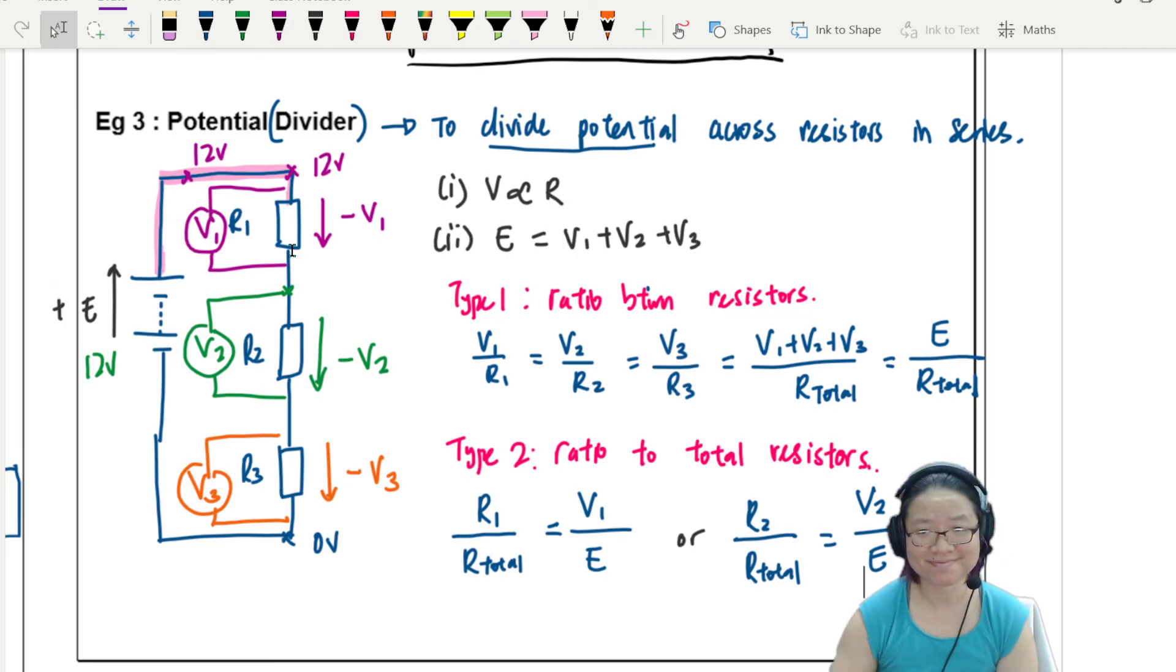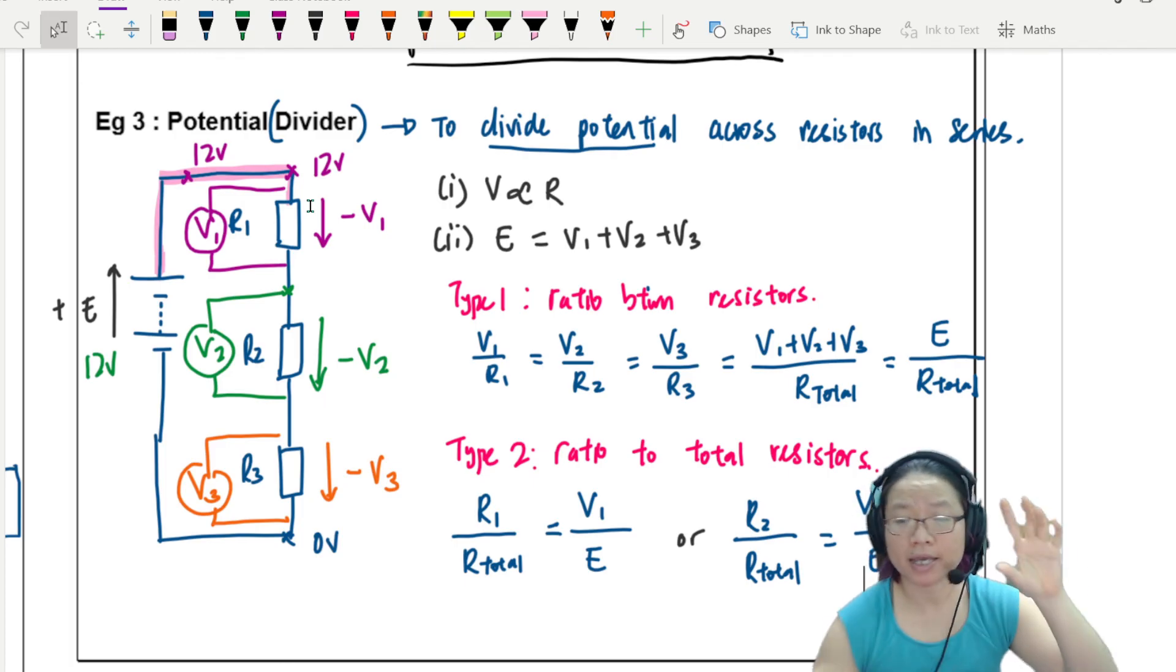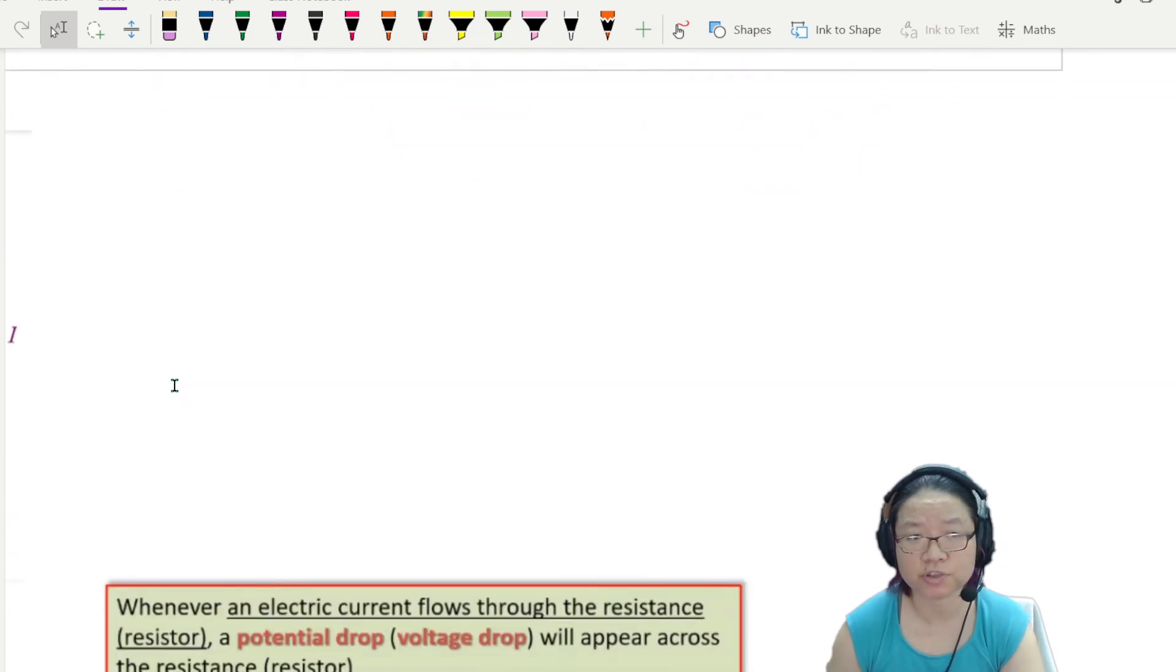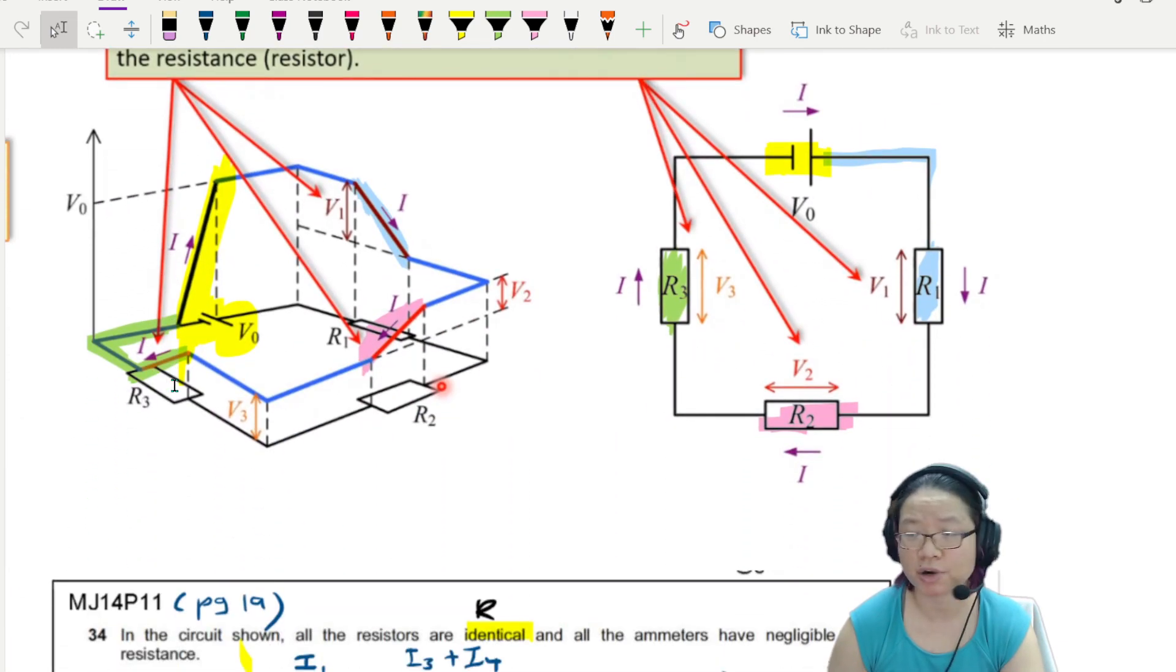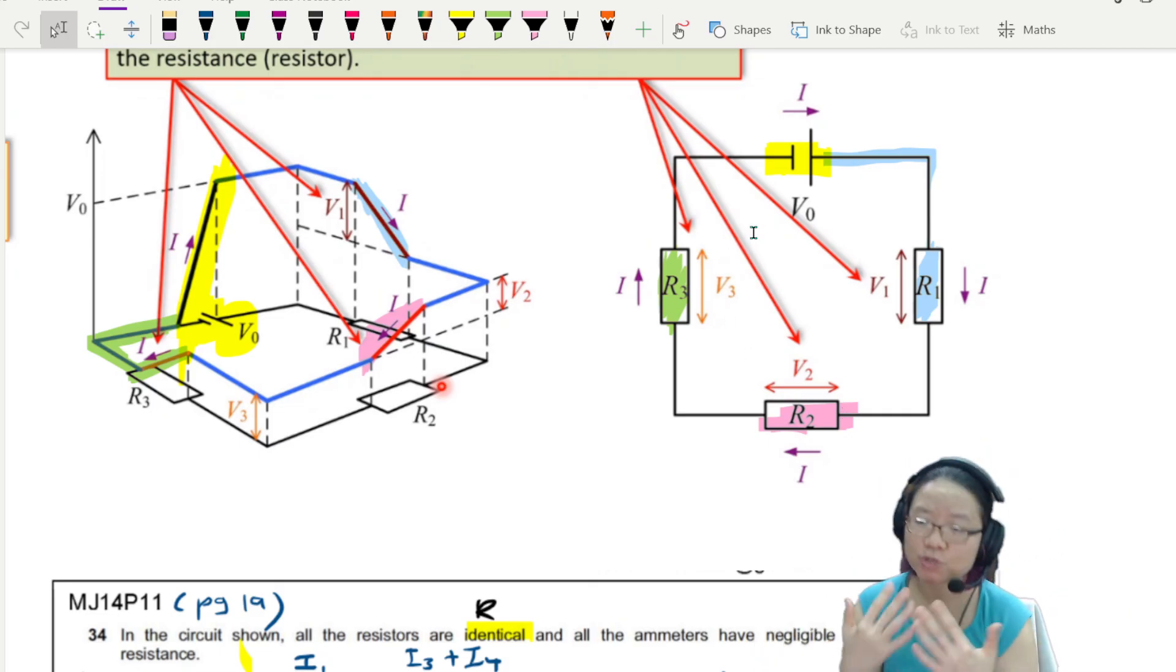All right. That's it for this theory video. So the main idea is number one. I can share out the potential difference in proportion to the resistor. Number two, the total drop must be equal to the EMF. If it helps you to visualize, you can think about this 3D graph. Wherever the battery supplies, it will be shared out across however many resistors you have, whether you have 3 or 4 or 10 or 2. And it will be shared in proportion to the value of R. All right. I'll see you in the example videos. Take care now.